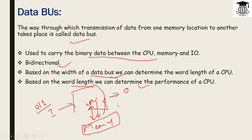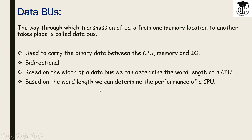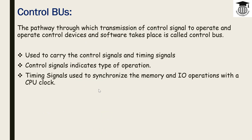The word length can be 16-bit, 32-bit, or 64-bit. Most processors used in personal computers are 32-bit or 64-bit. The control bus is the pathway through which transmission of control signals from the control unit takes place.